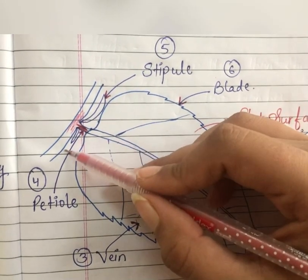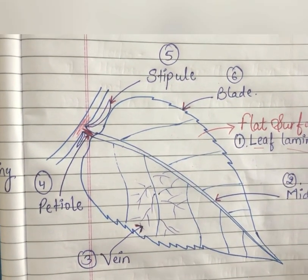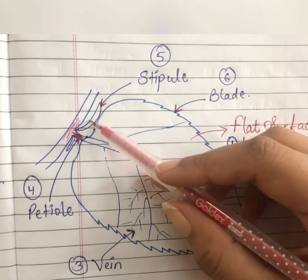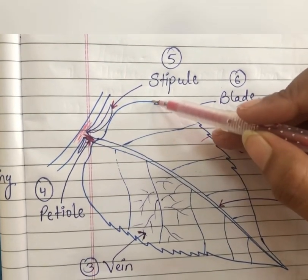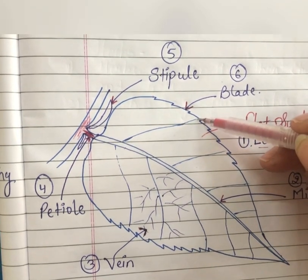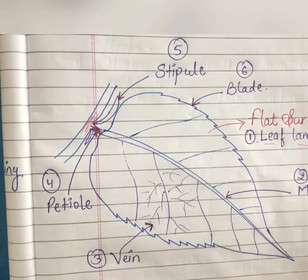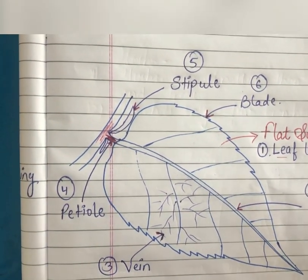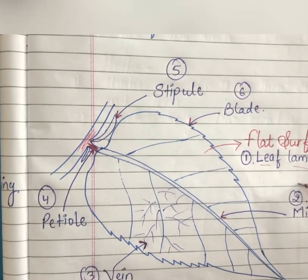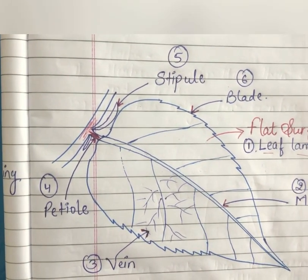You may have seen small green new leaves at the base — those are called stipules. Now, looking at the sharp edges of the leaf, we call that the blade. So here we have discussed six different parts of the leaf. Now we will discuss their functions.